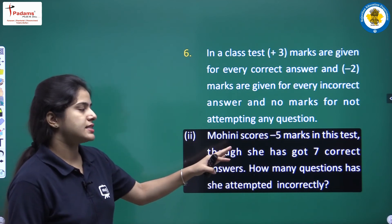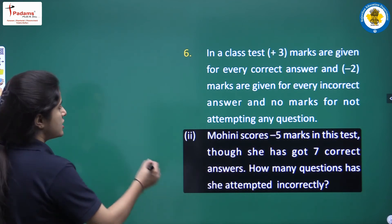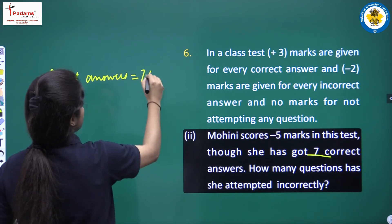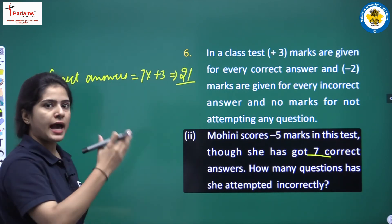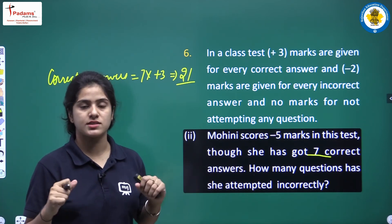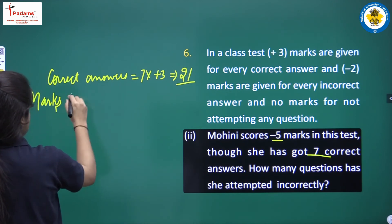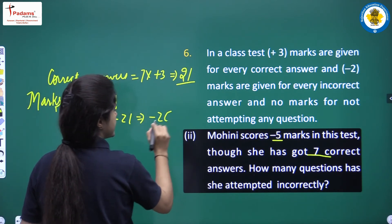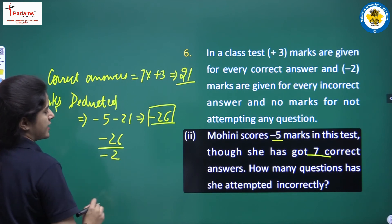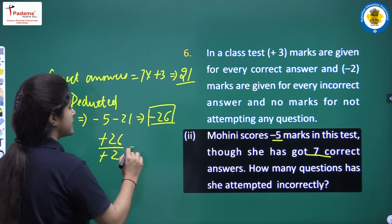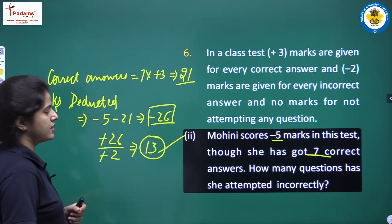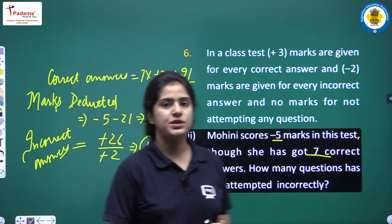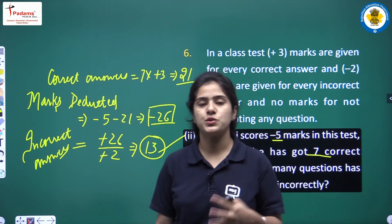Mohini scored minus 5 marks and got 7 correct answers. For 7 correct answers: 7 × 3 = 21 marks. But she scored −5, so marks deducted = −5 − 21 = −26. Number of incorrect answers = −26 ÷ (−2) = 13. So Mohini attempted 13 questions incorrectly.